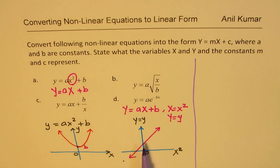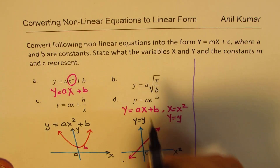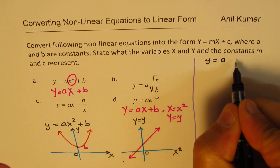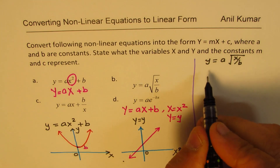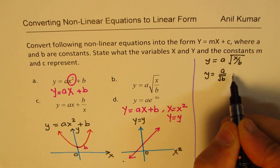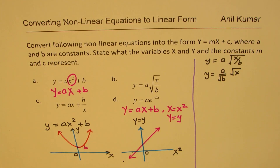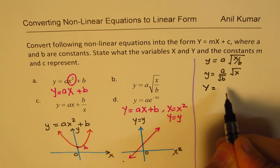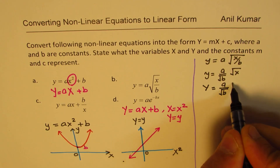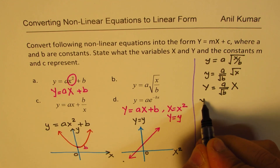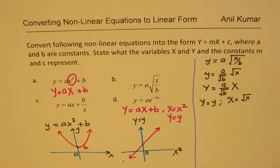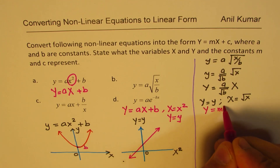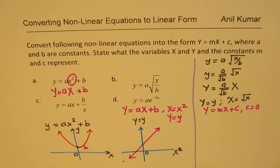Now apply the same principle and do part b — you can pause the video and then look at my solution. For part b, we have the equation y equals to a times the square root of x over b. This can be rewritten as y equals to a over square root b, times square root of x. This becomes capital Y equals to a over square root b times capital X, where capital Y equals lowercase y and capital X equals square root of x. This is the form capital Y equals mX plus c where c equals 0 — a direct variation.